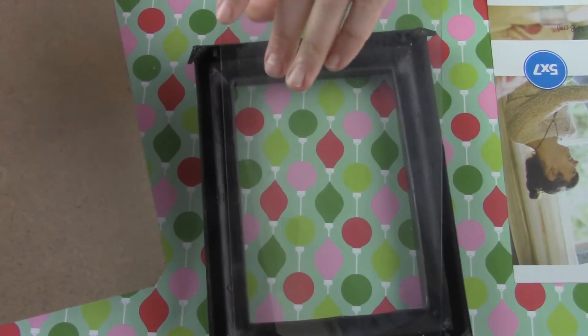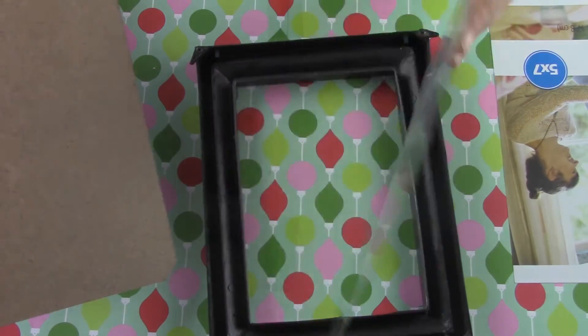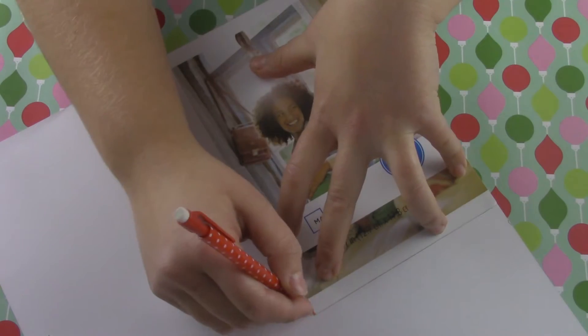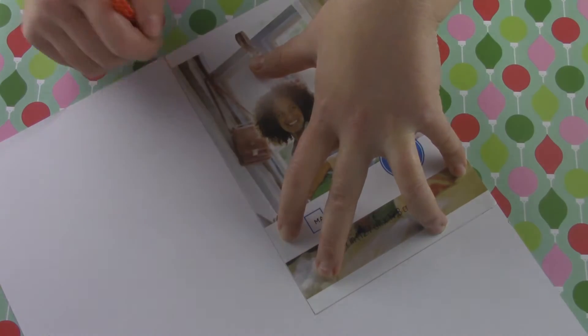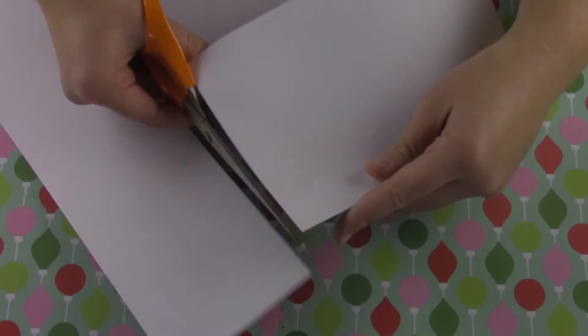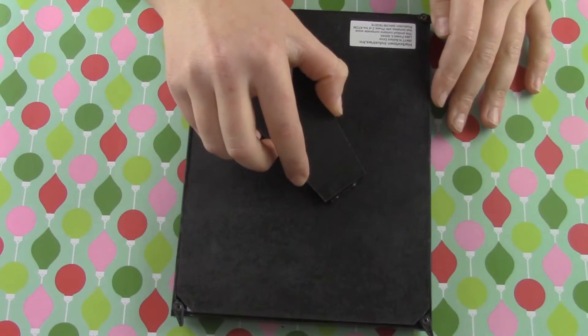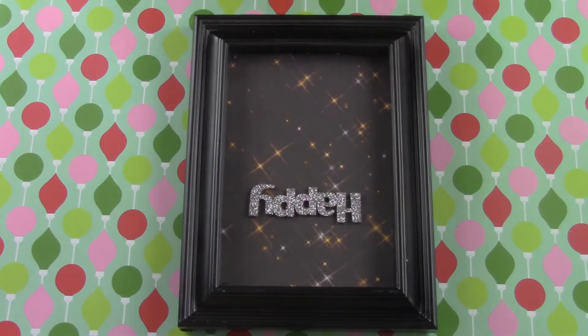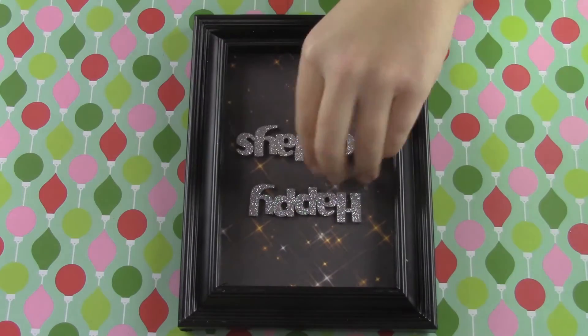Once again you will not need the glass from your picture frame so go ahead and take that out. Then use the picture to trace and cut out a small square out of your cardstock and put that back into the picture frame. Then add your scrapbook cutouts. I made mine say Happy Holidays.